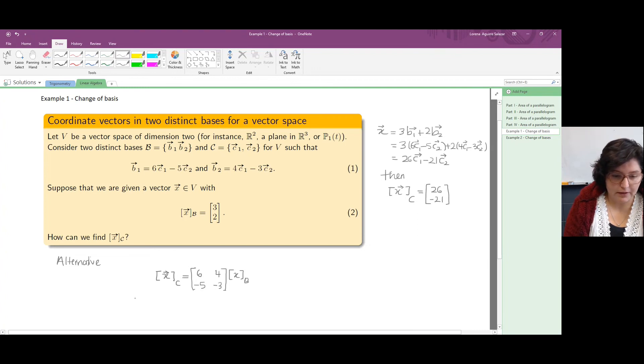When we multiply the matrix, that is 6, 4, minus 5, minus 3, by 3, 2, we perform the same operations we were doing with coefficients. We do 6 times 3 plus 4 times 2, that's 26, and then minus 5 times 3 minus 3 times 2, that's minus 21.